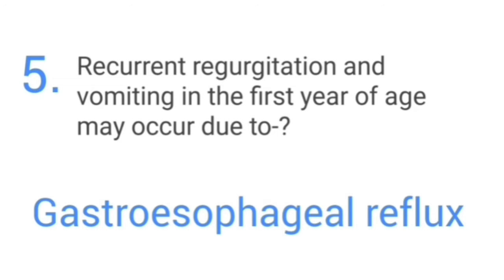Recurrent regurgitation and vomiting in the first year of age may occur due to gastroesophageal reflux.